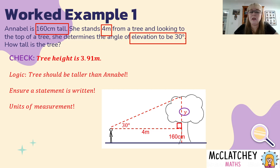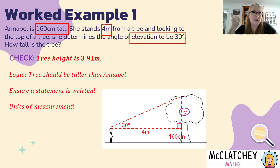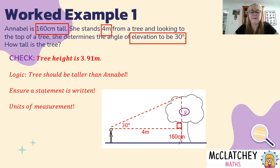Now we do the check component. We know the tree height is 3.91 meters — first we do a logic check. The tree should be taller than Annabelle, and we know it should be taller because she's looking up to the top of the tree. If the tree was shorter she'd be looking down or straight ahead, so that passes the logic check. We also need to make sure we wrote a statement and not just y plus 160, because we need to answer the question: how tall is the tree? We give an answer as a statement, and we've used units of measurement in meters — so we've solved that problem.